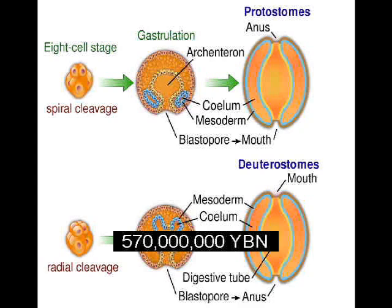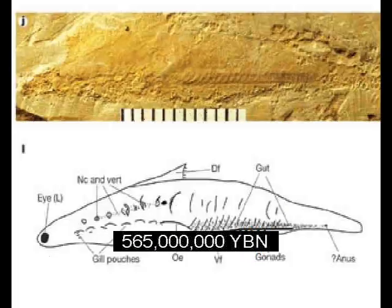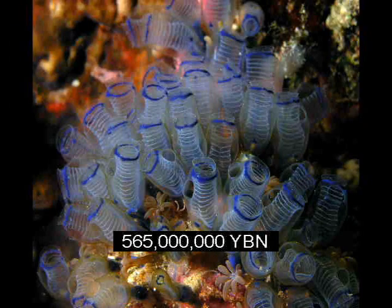Deuterostomes — ancestor of acorn worms, starfish, and all chordates. Chordates — ancestor of all tunicates, fish, amphibians, reptiles, birds, and mammals. Tunicates.